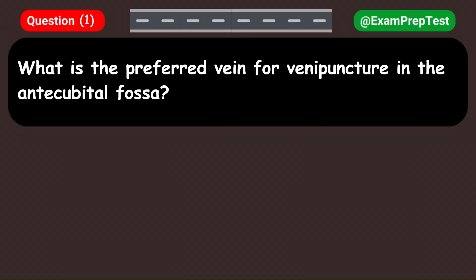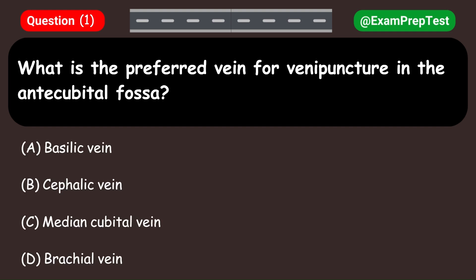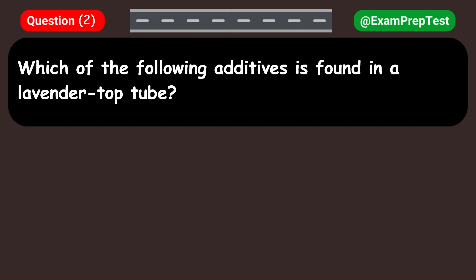What is the preferred vein for venipuncture in the antecubital fossa? A. Basilic vein. B. Cephalic vein. C. Median cubital vein. D. Brachial vein. Answer: C. Median cubital vein.